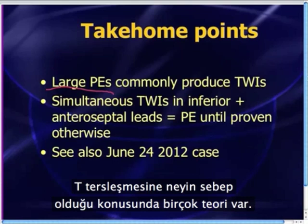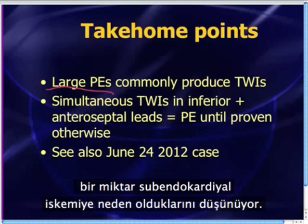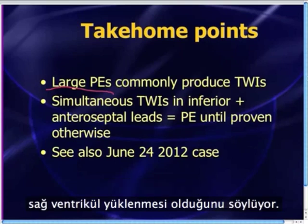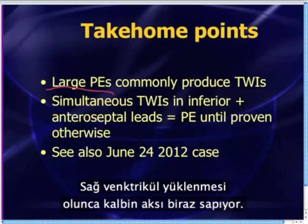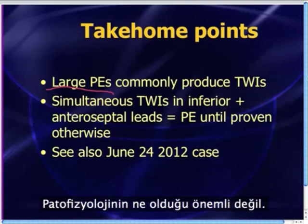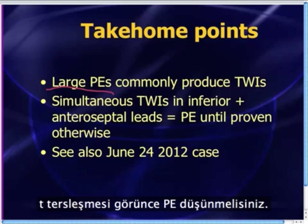There are various theories as to what may be causing these T-wave inversions. Some people have proposed that large PEs produce T-wave inversions because they produce some degree of subendocardial ischemia, flipping the T-waves. Others have suggested that when a large PE causes right-sided overload and right ventricular distension, the heart shifts its axis slightly, producing the T-wave inversions. I don't really care about the pathophysiology — what matters is that we all remember that when you see T-wave inversions, you should also think about PE.